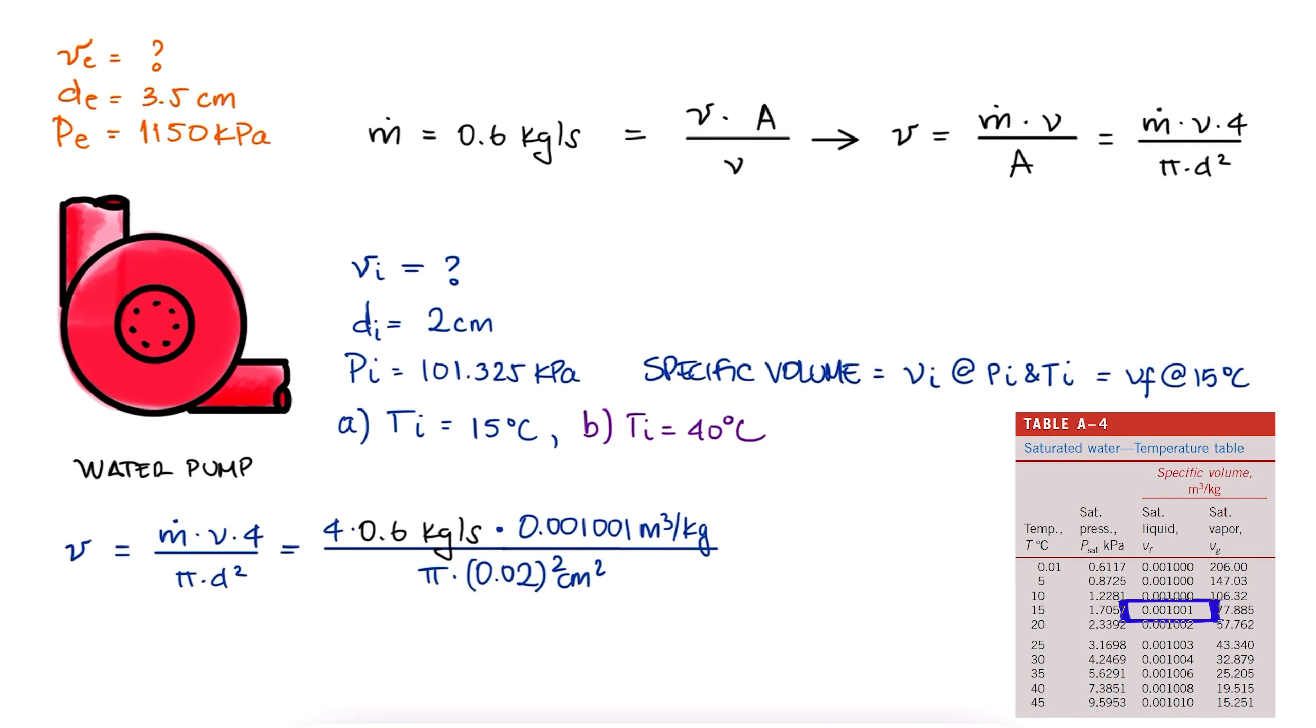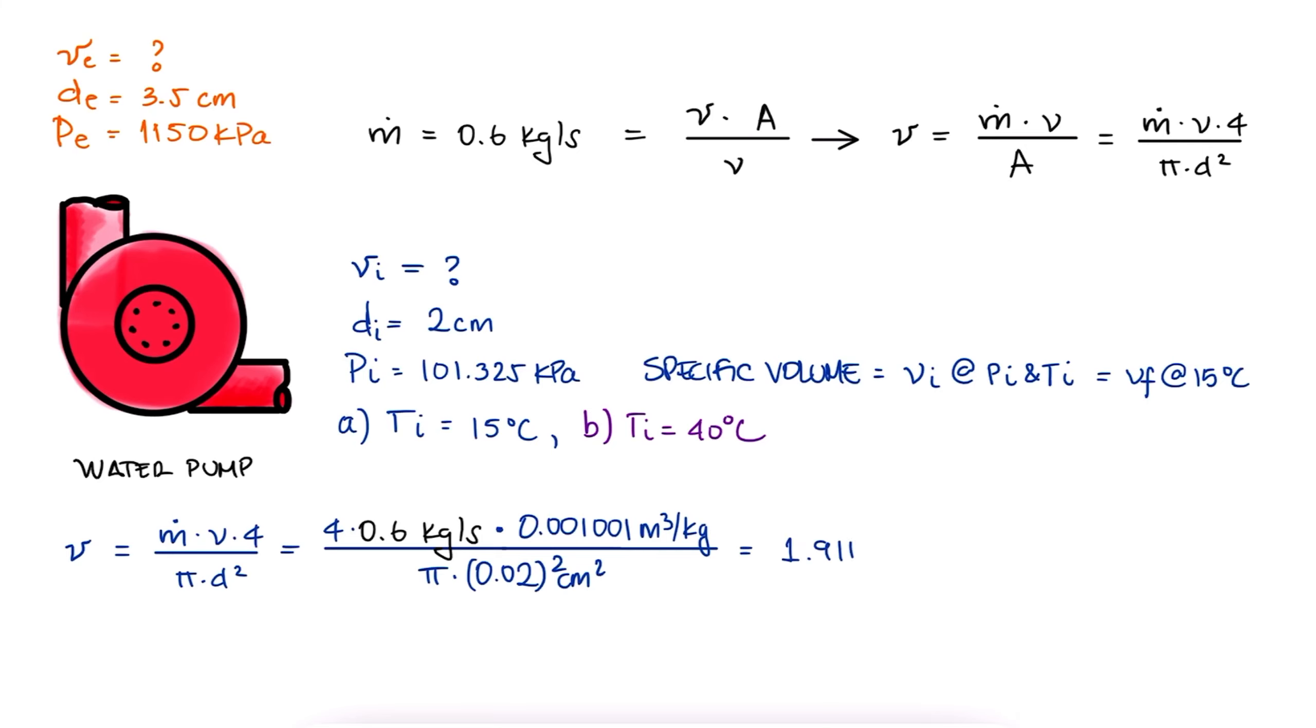We substitute that value and find that the velocity at the inlet is 1.92 meters per second.